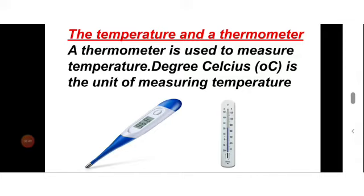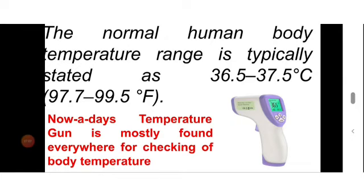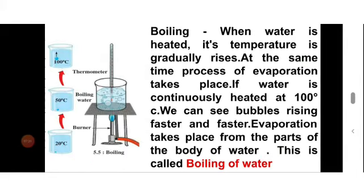A thermometer is used to measure temperature. Degree Celsius is the unit of measuring temperature. There are several types of thermometers available. Nowadays digital thermometers are frequently used. The normal body temperature ranges from 36.5 to 37.5 degrees Celsius, or 97.7 to 99.5 degrees Fahrenheit.